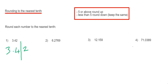To decide, look at the number after the line. The number after the line is 2. So that means we have to round the number down to 3.4.